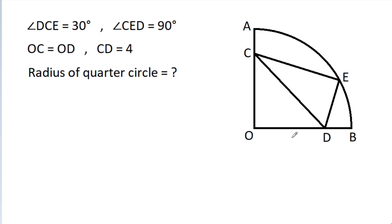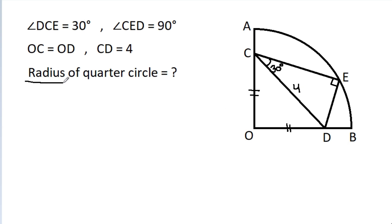In this video, we have given that angle DCE is 30 degrees, angle CED is 90 degrees, OC is equal to OD, and CD is 4. We have to find the radius of the quarter circle.